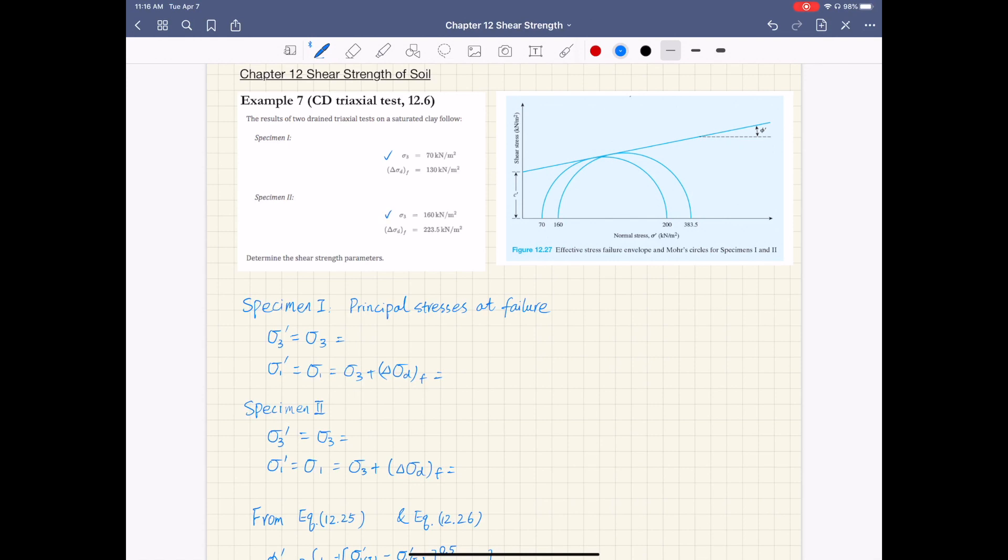at 70 and 160. And you are also given the deviator stress, delta sigma d at failure for both specimens. And you are asked to determine the shear strength parameters.